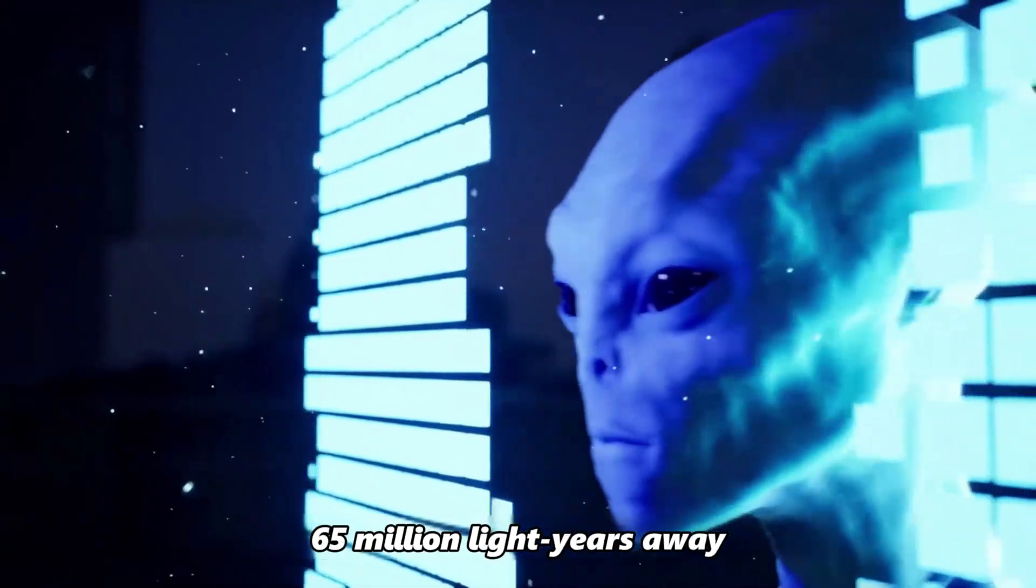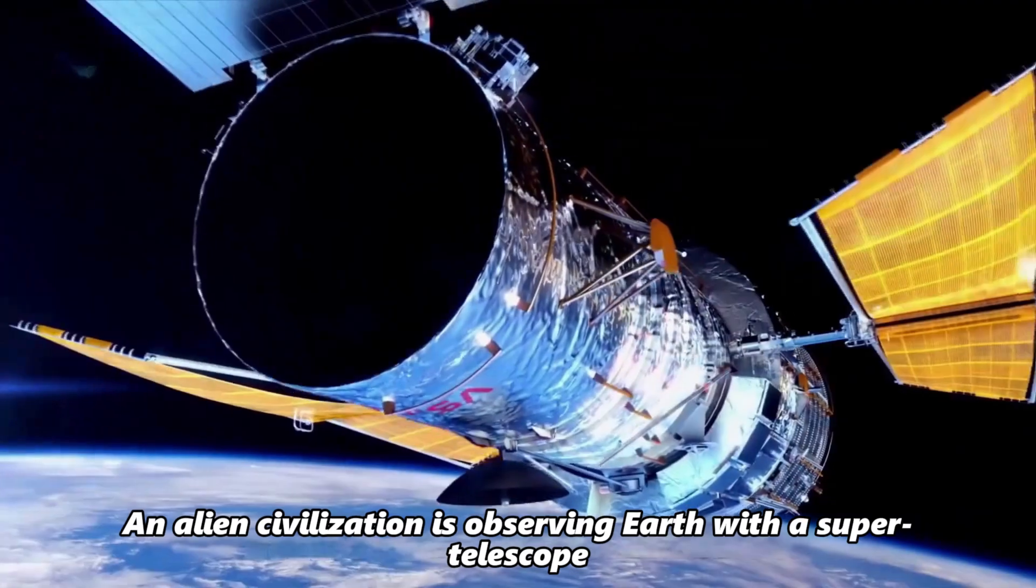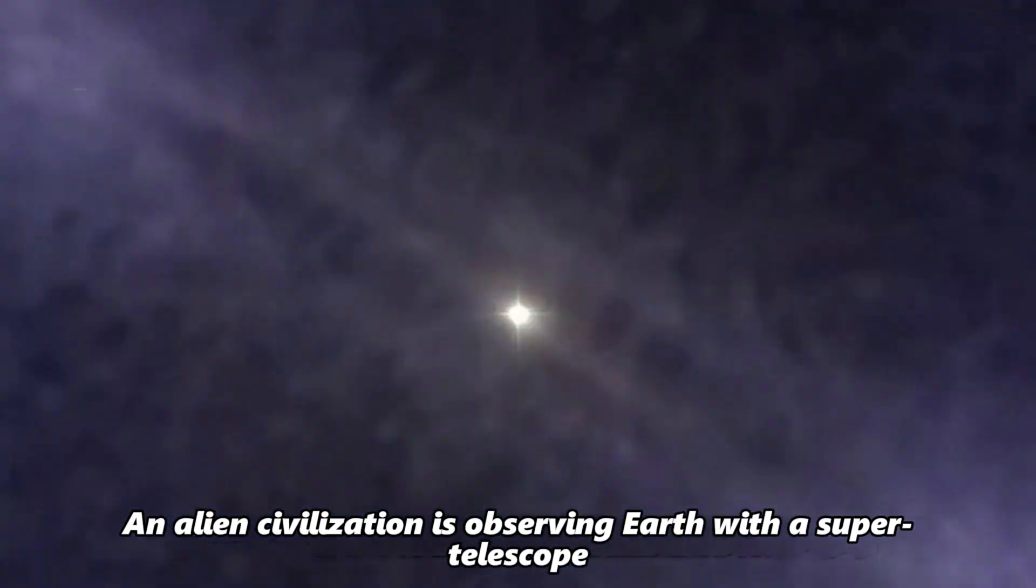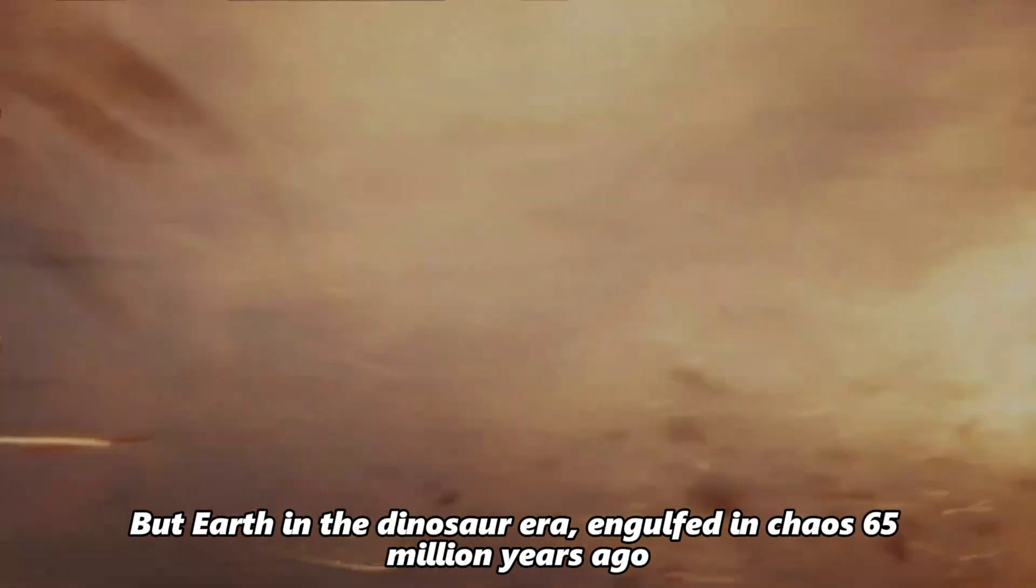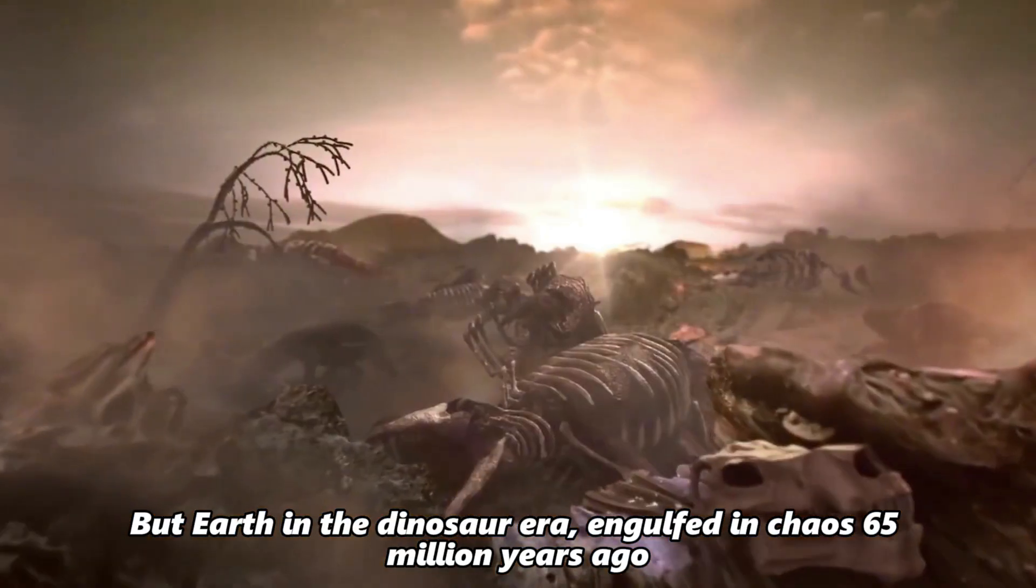Imagine that right now, 65 million light years away, an alien civilization is observing Earth with a super telescope. What they'd see wouldn't be us today, but Earth in the dinosaur era, engulfed in chaos 65 million years ago.